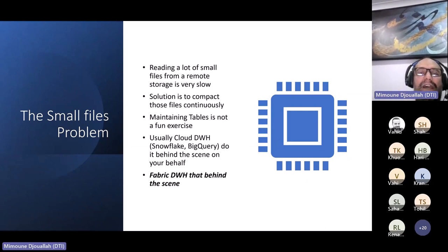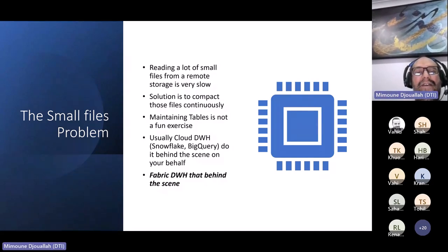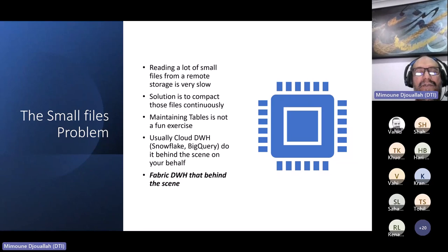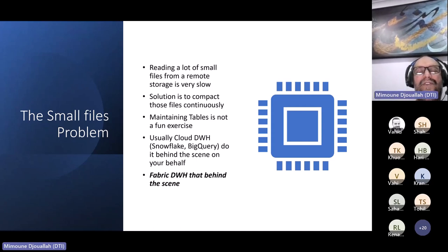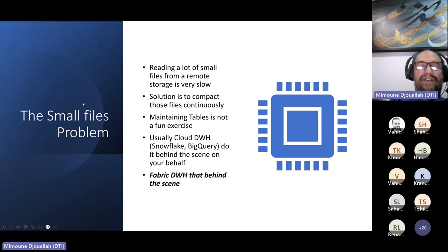You shouldn't have to care about compaction. Cloud data warehouses like Snowflake and BigQuery just do it behind the scenes. The Fabric data warehouse does the same — but not Spark. That's an important distinction.